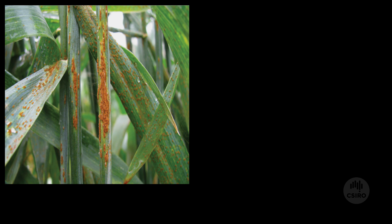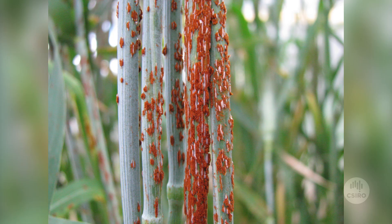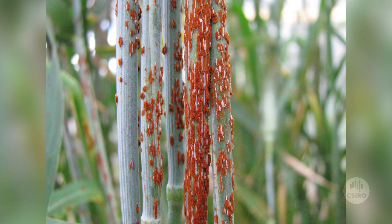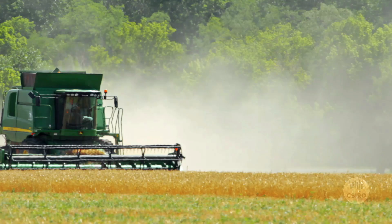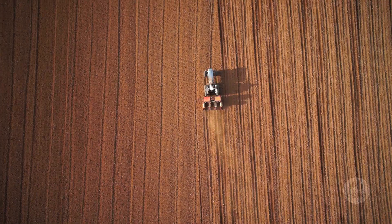New strains of fungi are constantly developing through evolution, which can make some plants vulnerable to infection. Diseases like rust fungus have plagued crop production since people first began farming. Globally, infections of rust destroy 15 million tonnes of wheat each year.